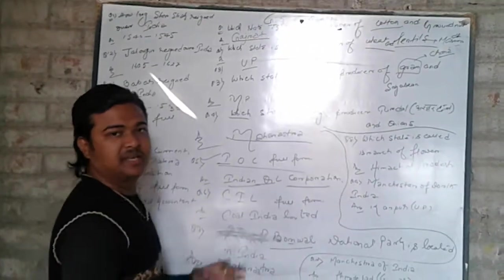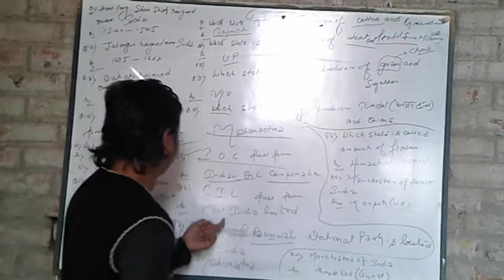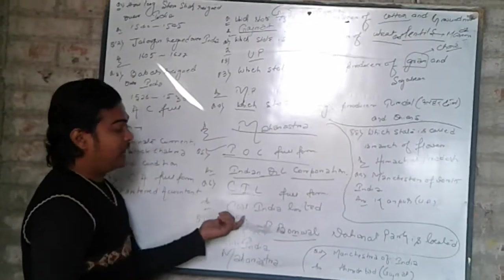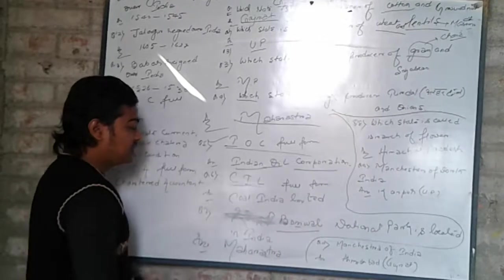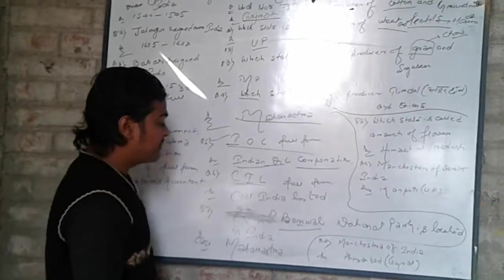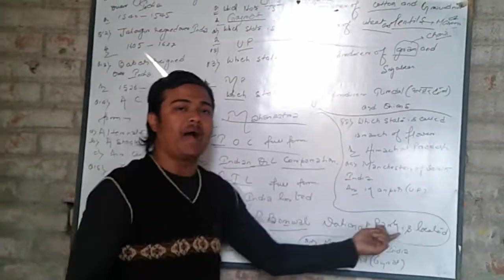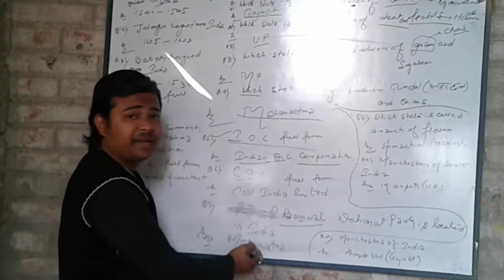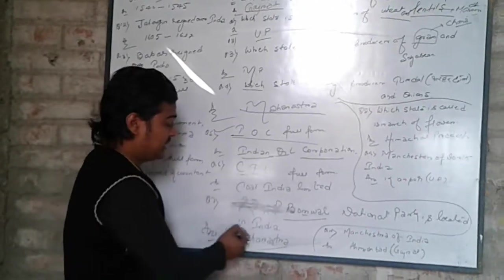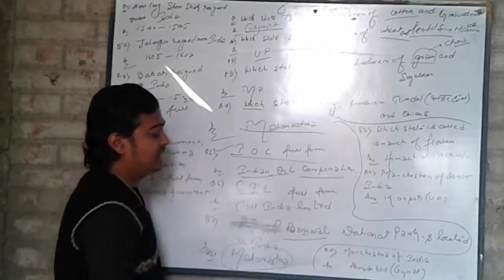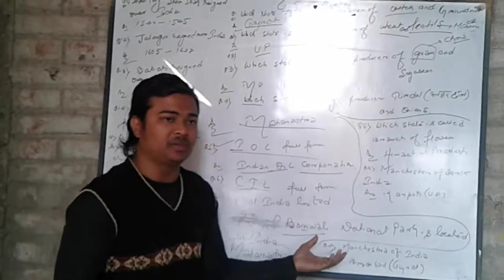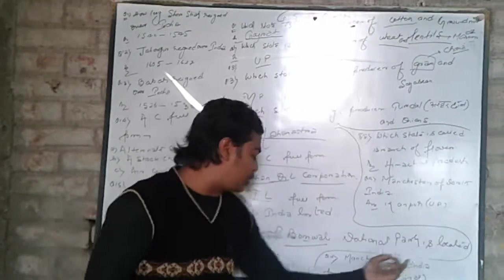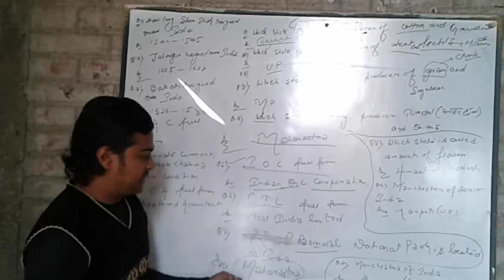Okay friends, next question: CIL — Coal India Limited. Next question: Borivali National Park is located where in India? It is located in Maharashtra. Remember this — Borivali National Park is located in Maharashtra.